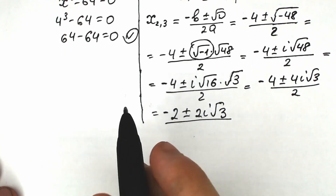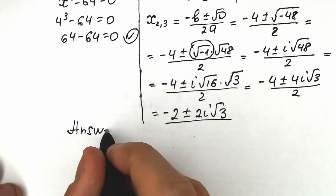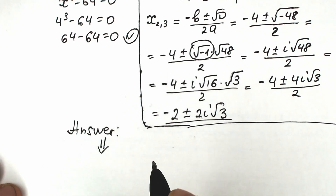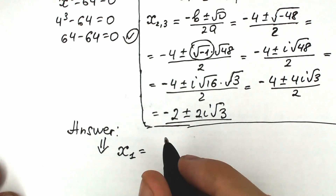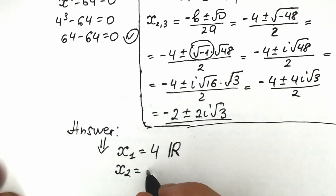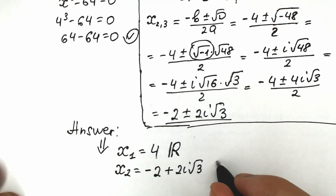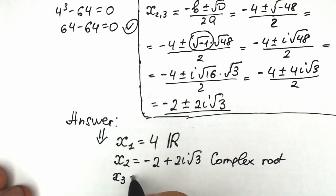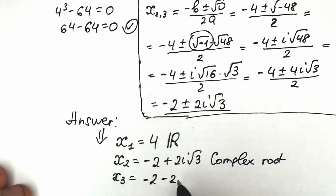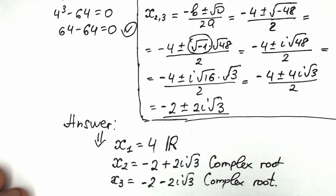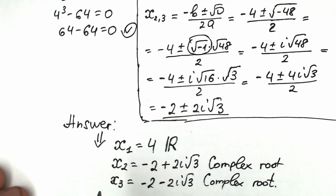So our final answer: x₁ equal to 4, this is our real number root. x₂ equal to negative 2 plus 2i√3, this is a complex root. And x₃ equal to negative 2 minus 2i√3, also a complex root. We found all roots — one real and two complex.